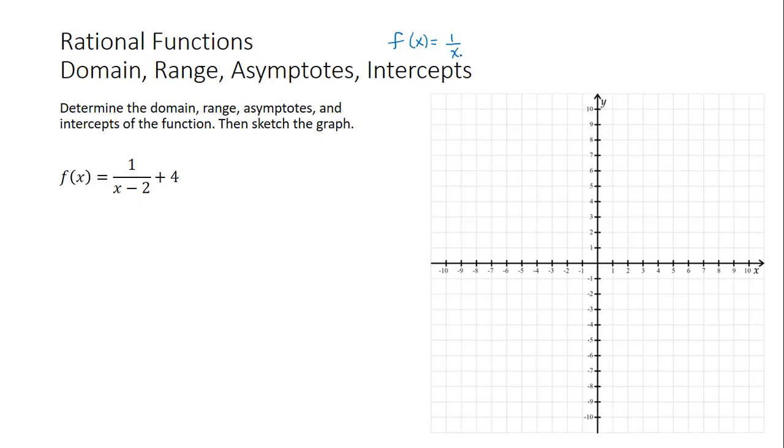And we want to find the domain, range, asymptotes, and intercepts of this function, which in our case is f of x equals 1 divided by the quantity x minus 2 plus 4.